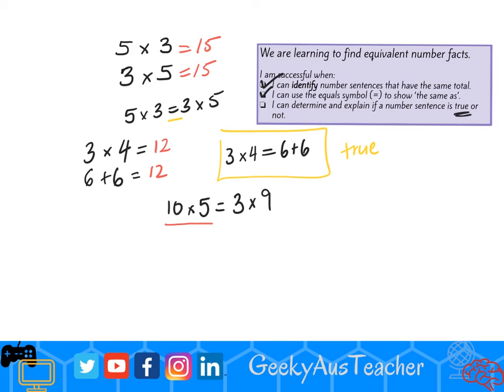If I take 10 times 5, I know that equals 50. If I take 3 times 9, I know that equals 27.